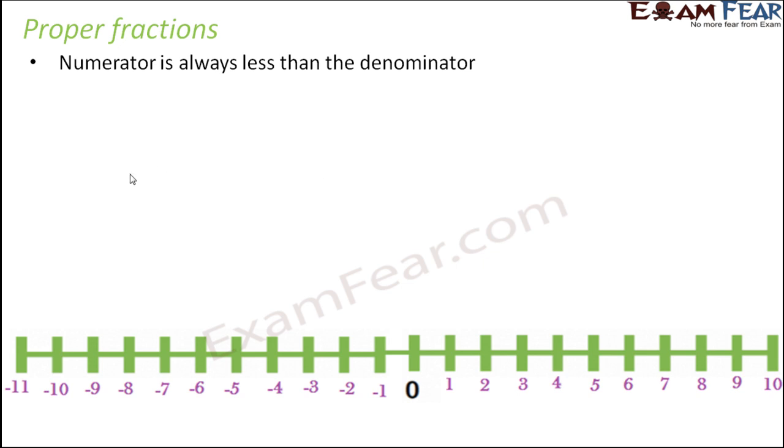So now when you notice in each one of these, whether you talk about 2 by 3, 1 by 3, 1 by 5, 3 by 7, 1 by 90 and so on, in each of these, the numerator is lesser than the denominator. That is the term above is lesser than the term below. So these type of fractions are called proper fractions because they are properly aligned to the definition of the fraction.